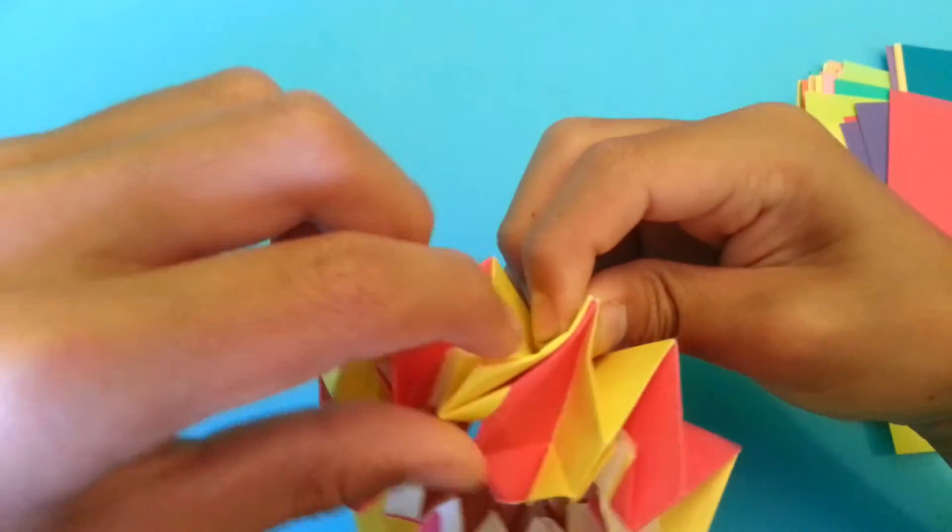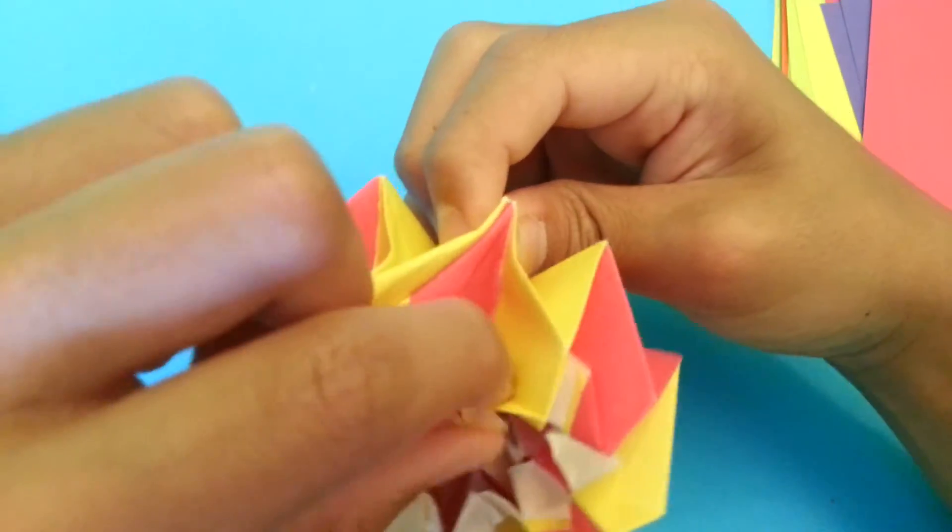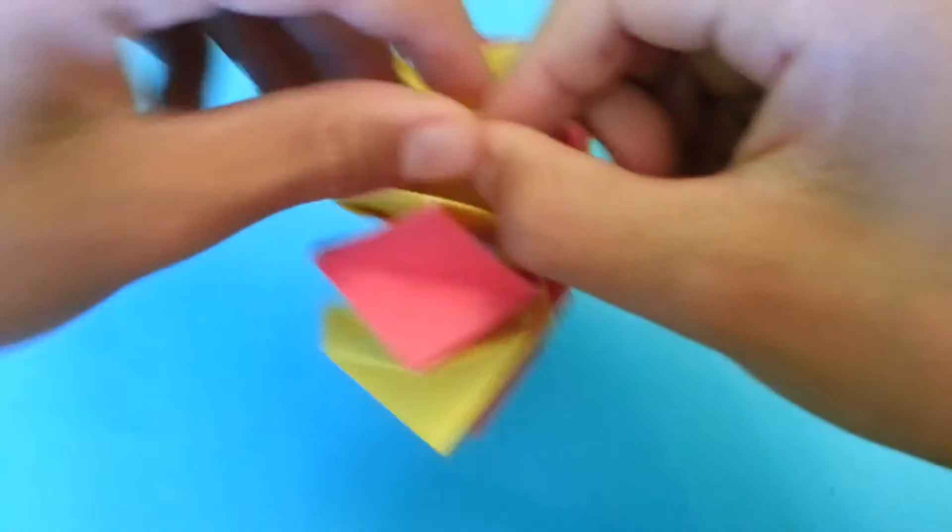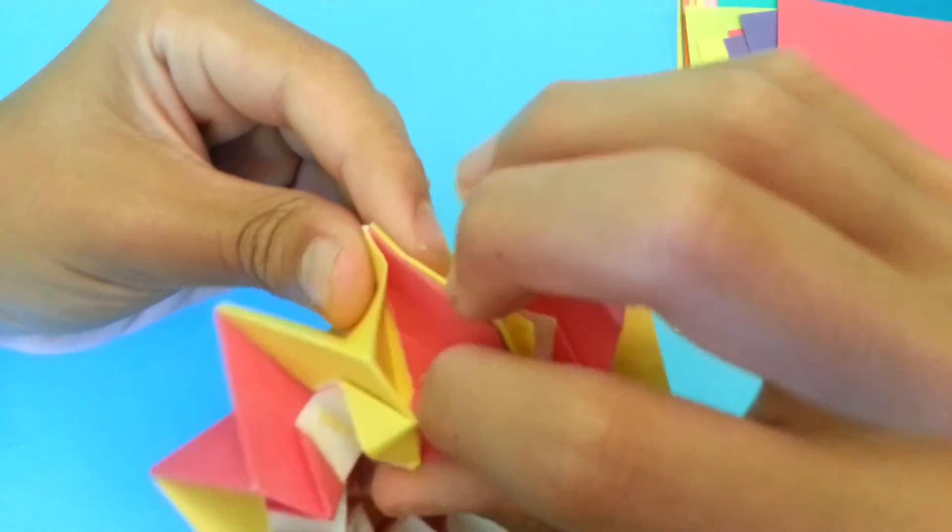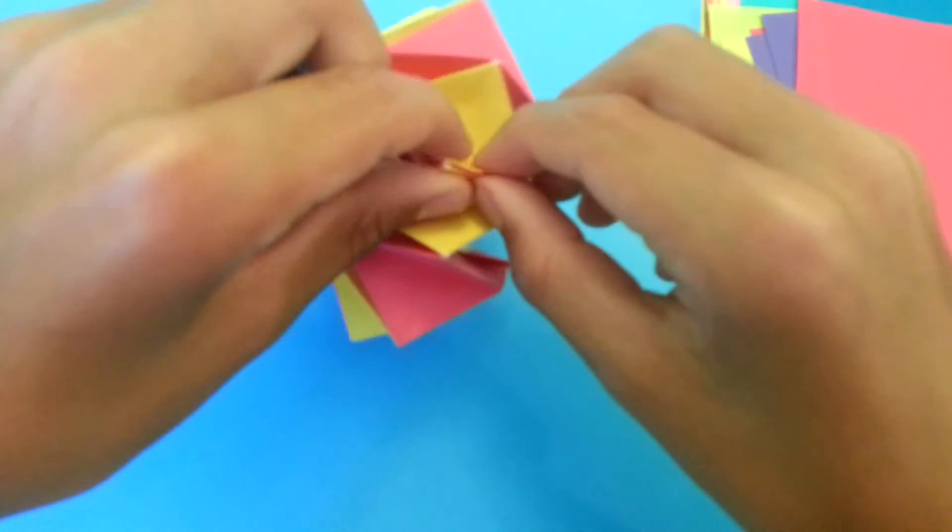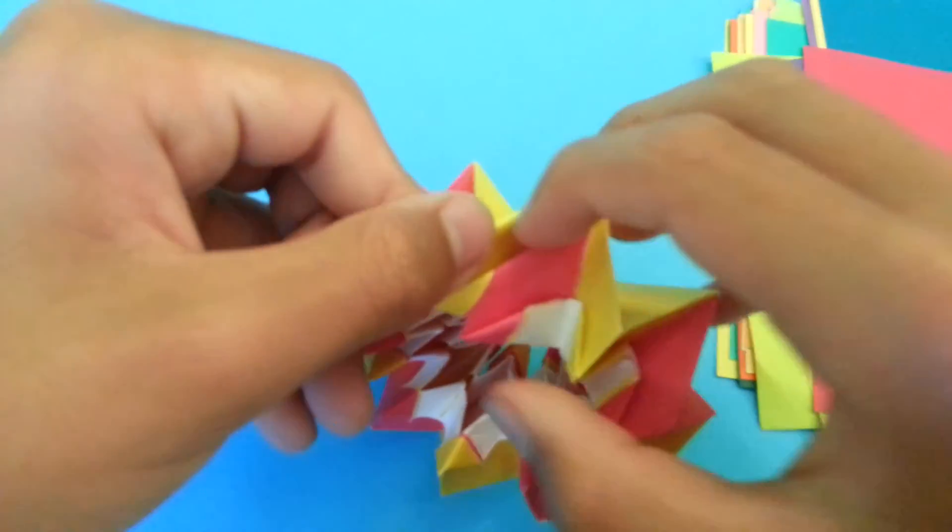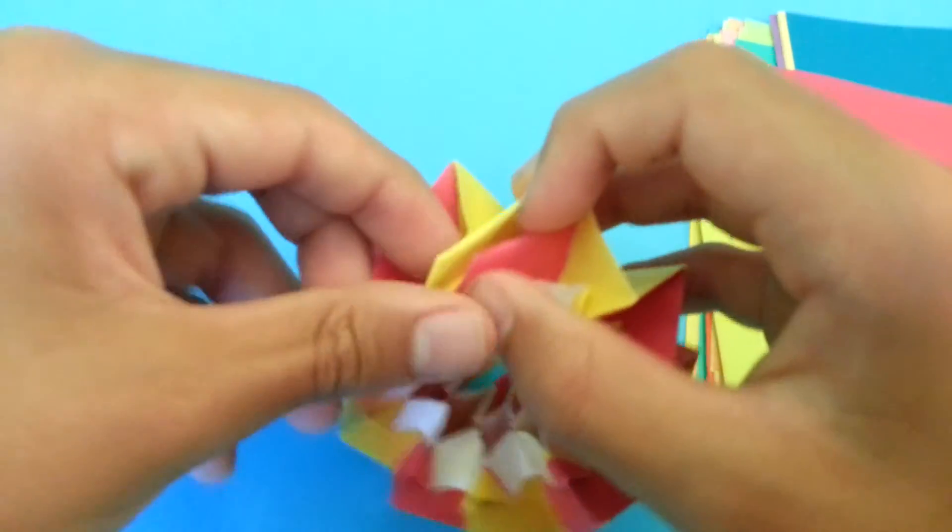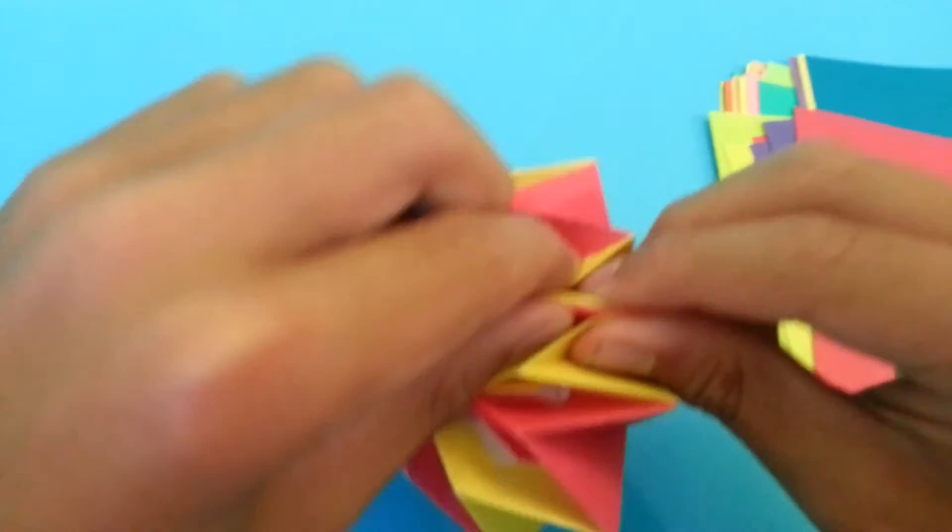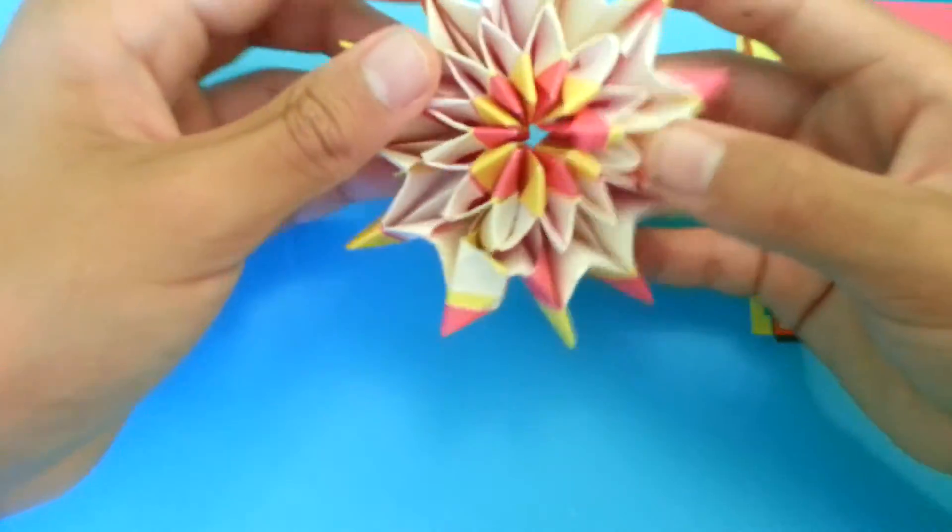So when we've done that, now you're just going to fold this flap up to lock the flaps together. When we've done that, you have your origami fireworks.